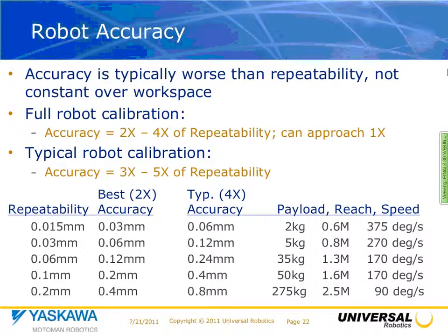You can see the repeatability, typical accuracy, and payload-reach-speed for a range of robots. This typical accuracy is what we use as part of our calculator to judge the fitness of the application. With that, Hob will continue to discuss the applications.